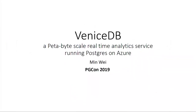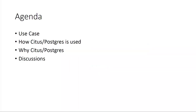Welcome to my talk. I'm going to share my experience about how I built a large-scale analytic service with Postgres on Azure. My talk has two parts: the first part covers the use case and how I use Citus and Postgres for the service. The second part covers why I'm using Citus and Postgres, because these days, especially if you come from Silicon Valley, there are many other choices to build large-scale services. I'll conclude with discussions on how Postgres can be improved for computing analytics services.